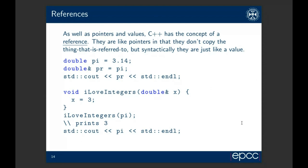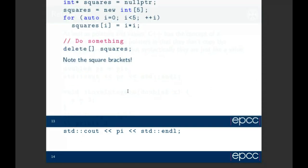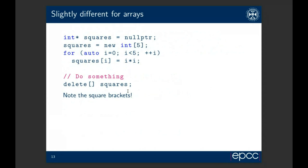There's a question: what would delete squares do without square brackets? It would probably cause a segmentation fault and crash the program at runtime. But it's undefined behavior — all bets are off. The joke is that it could make demons fly out of your nose; it's allowed to by the standard. In practice it will probably just crash your program.